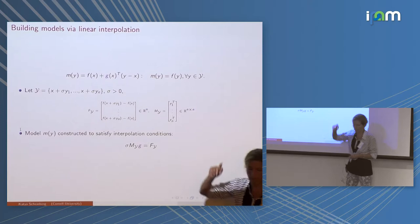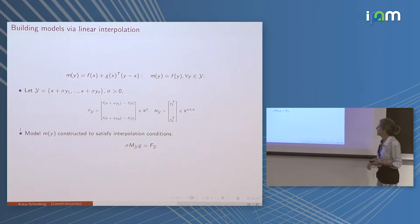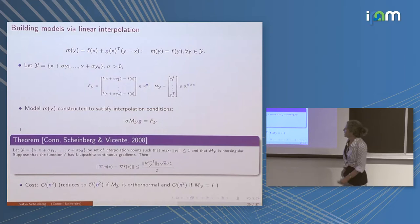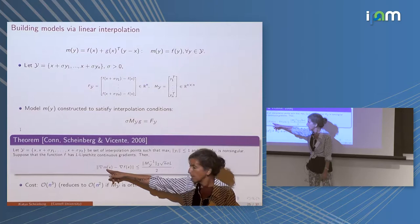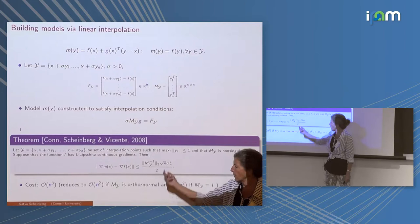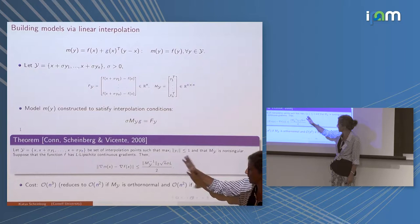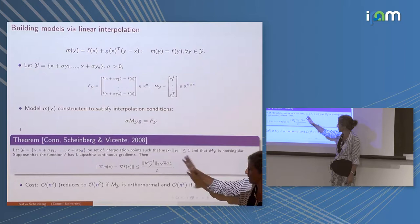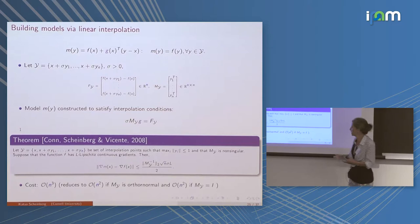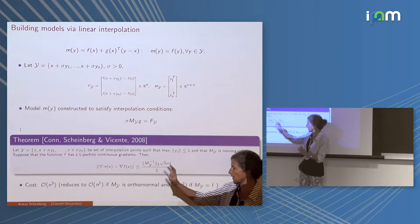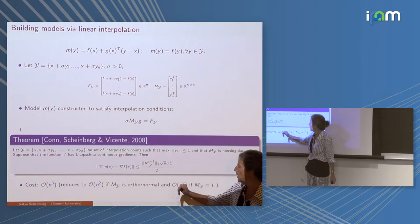I solve the system of linear equations and can guarantee that the gradient g of the model m is not too different from the true gradient. The bound involves L (the Lipschitz constant), n (dimension), the inverse norm of the matrix, and the sampling radius sigma. Smaller radius gives better behavior — exactly the Taylor series expansion behavior I wanted.